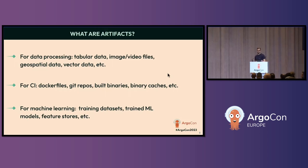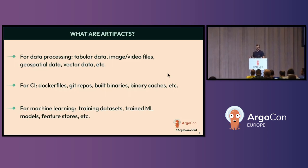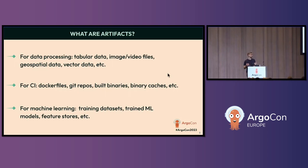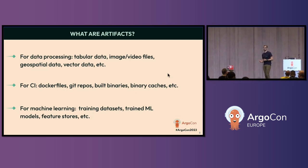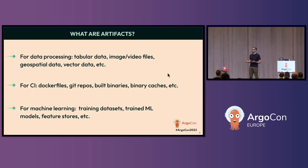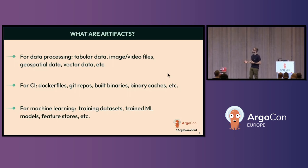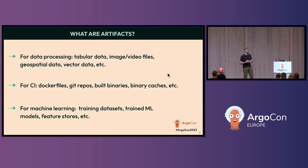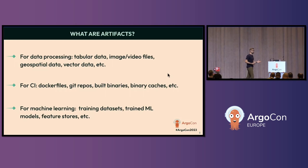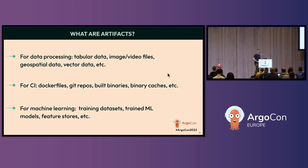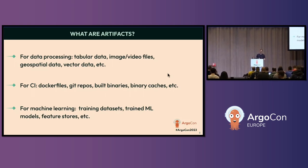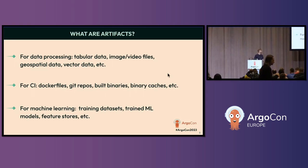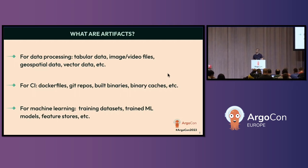Some quick background: artifacts cover several different data types depending on the use case. For data processing, we're typically talking about tabular data, image, video files, maybe some vector data. For CI, it looks very different — we're typically looking at Git repos, Docker files, and the like. And for machine learning, we have specialized data types like training datasets, trained models, and feature stores.